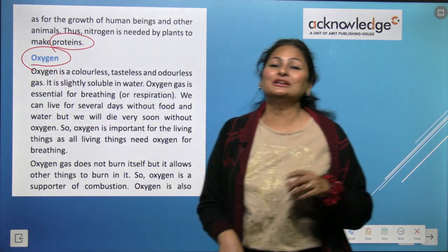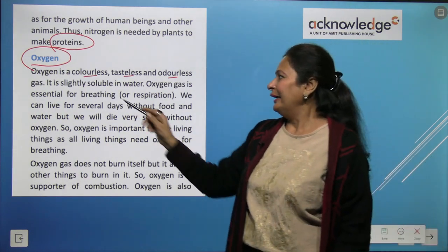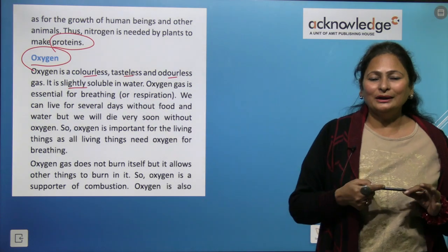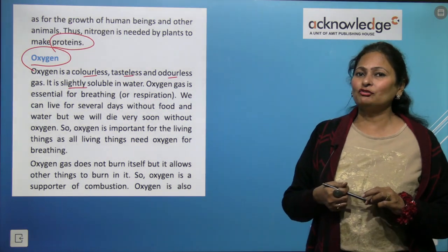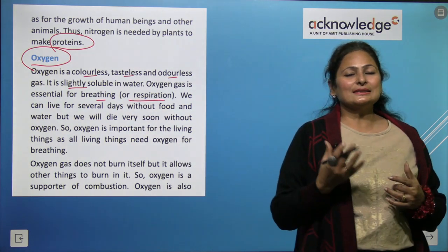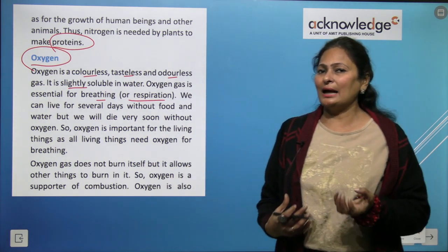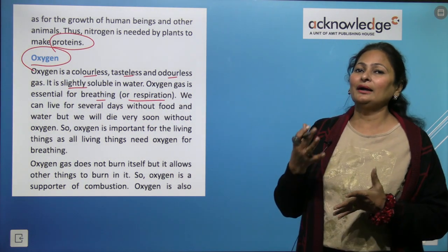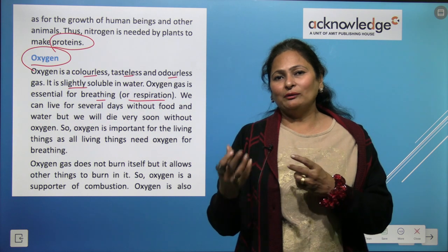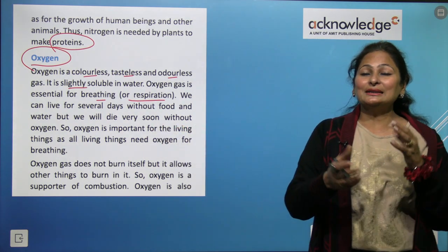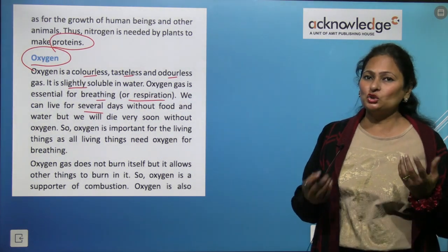The next component is oxygen. Oxygen is again colorless, tasteless, and odorless gas. It is slightly soluble in water. Oxygen gas is essential for breathing. We can live for several days without food and water but we will die without oxygen. So oxygen is important for all living beings.